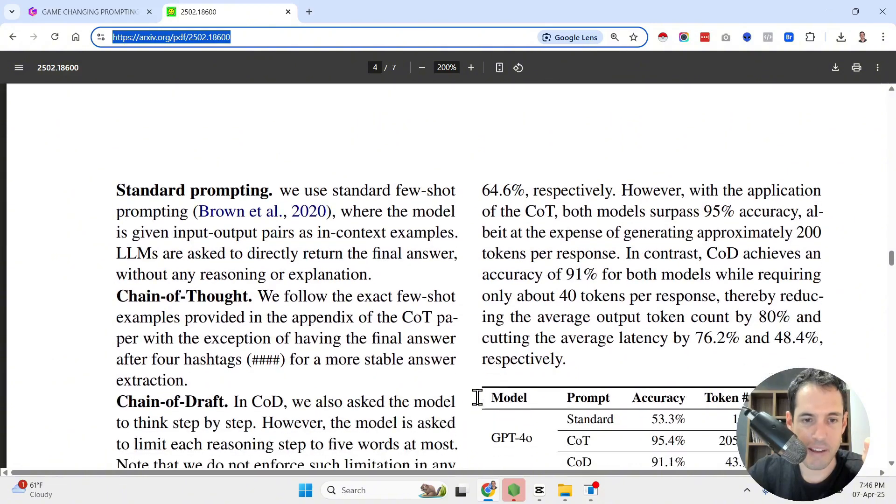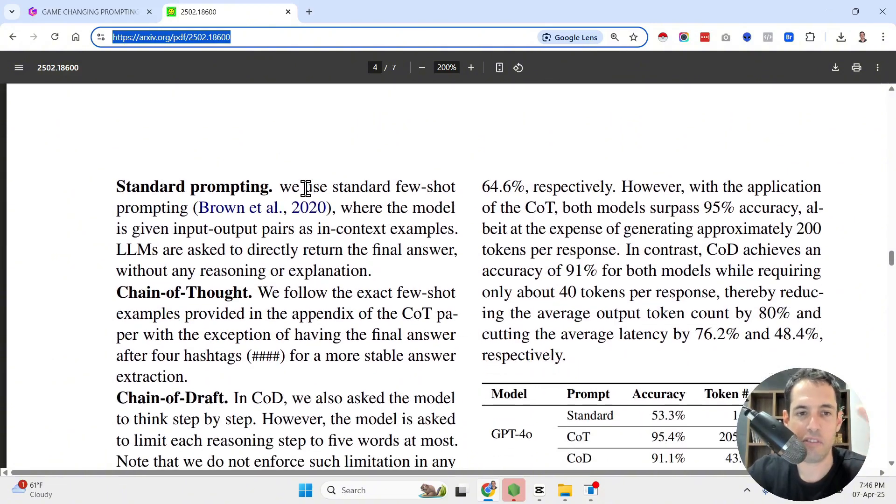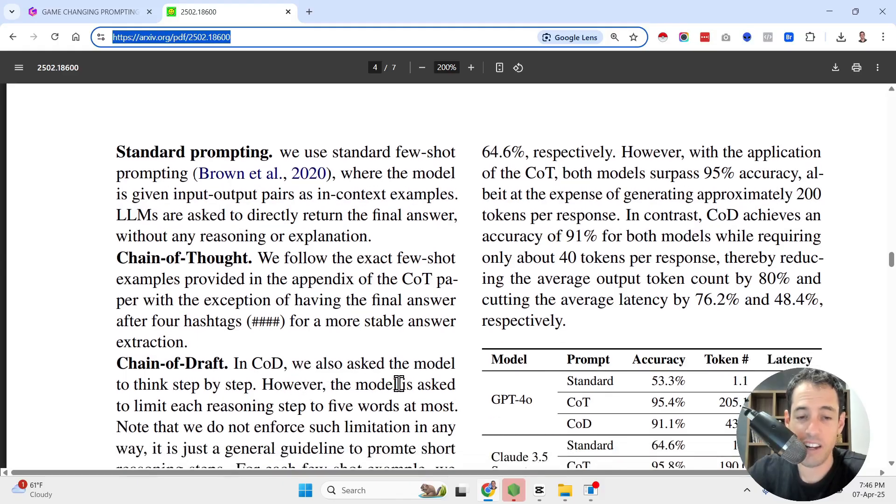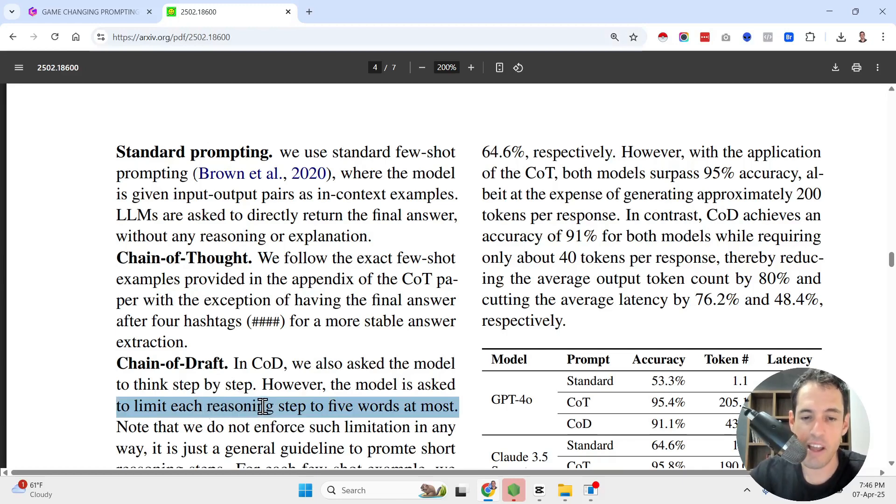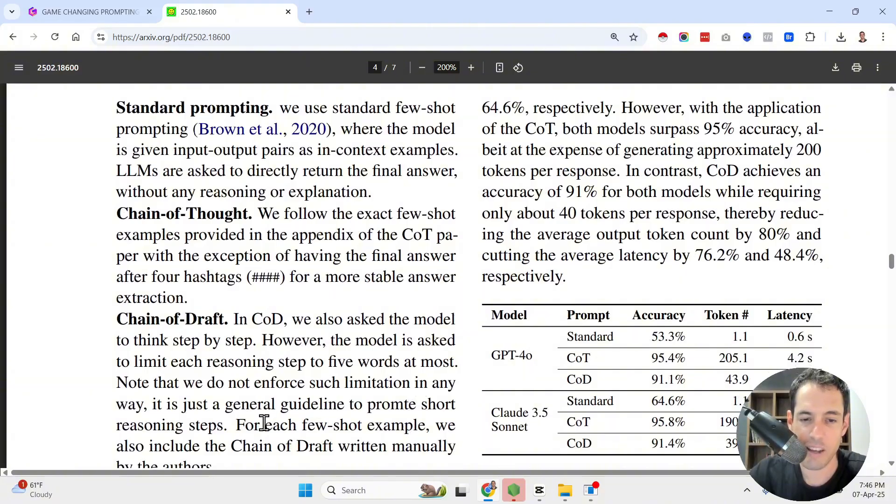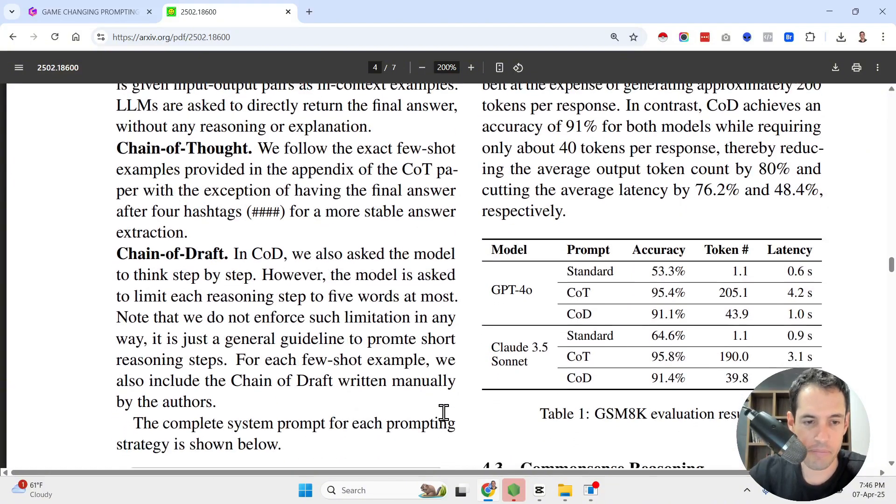Now, let me go to the experiment. Basically, what they did, they compared three different prompting techniques, the standard prompting, the chain of thought, so the same type of prompt like in standard prompting, but in opposing to this, they asked it to provide a step-by-step answer. And in the chain of draft, they asked the model to think step-by-step. However, the model is asked to limit each reasoning step to five words at most. Now, notice they do not enforce such limitations in any way. It's just a general guideline to promote short reasoning steps for each short example.